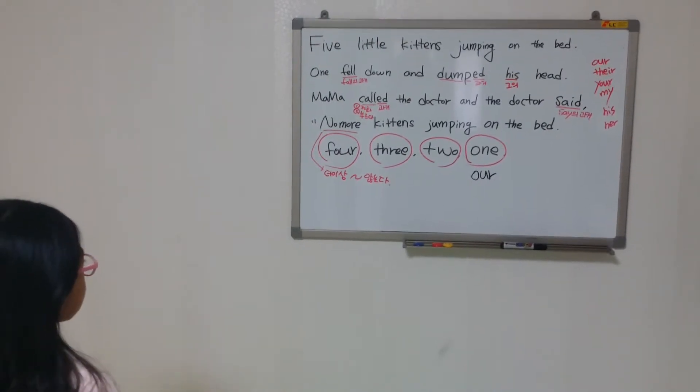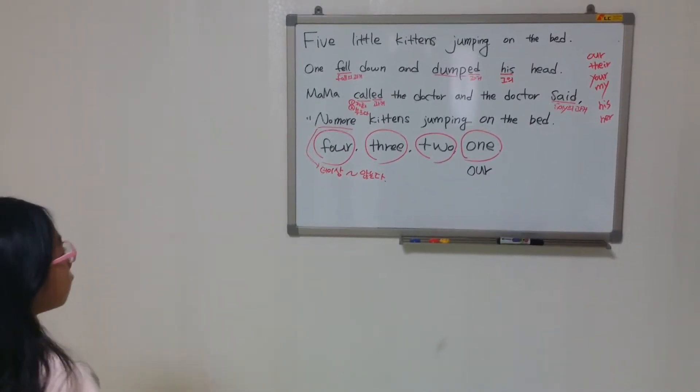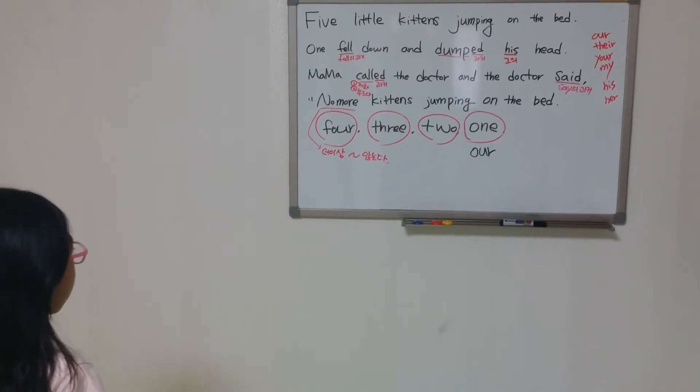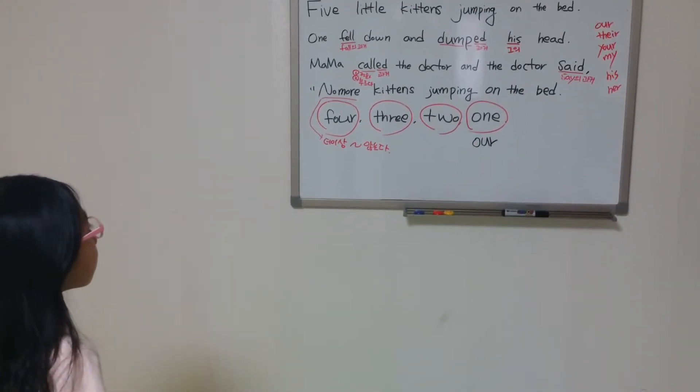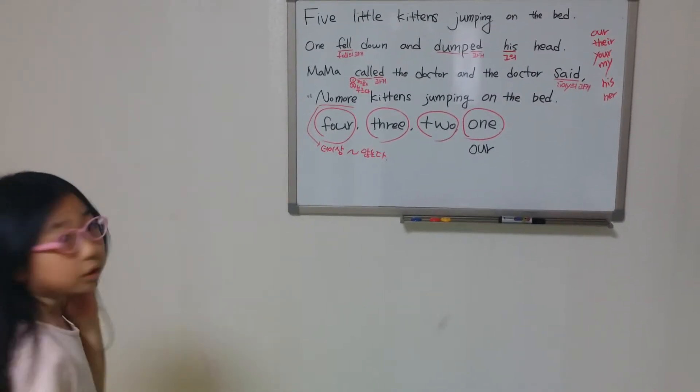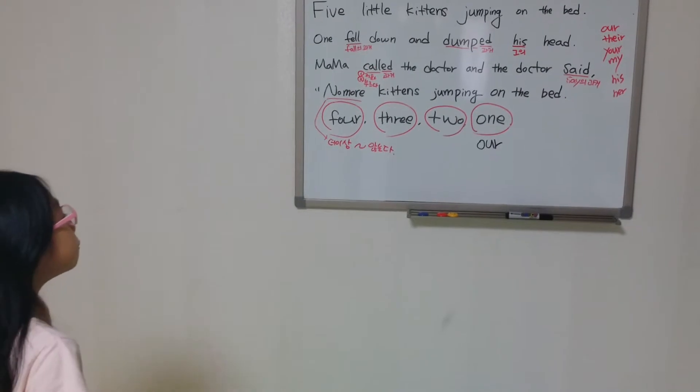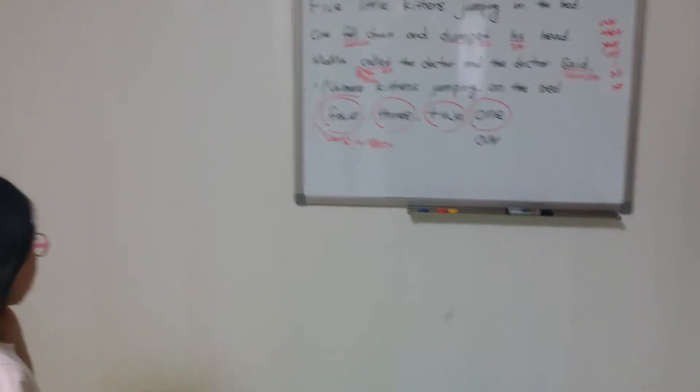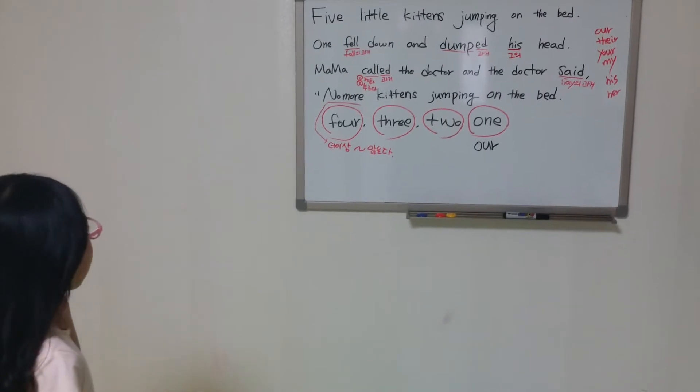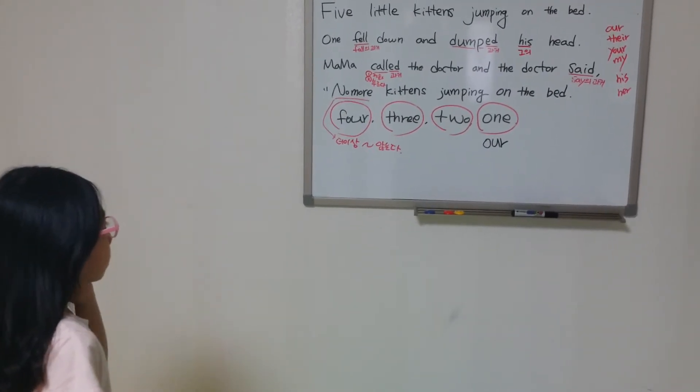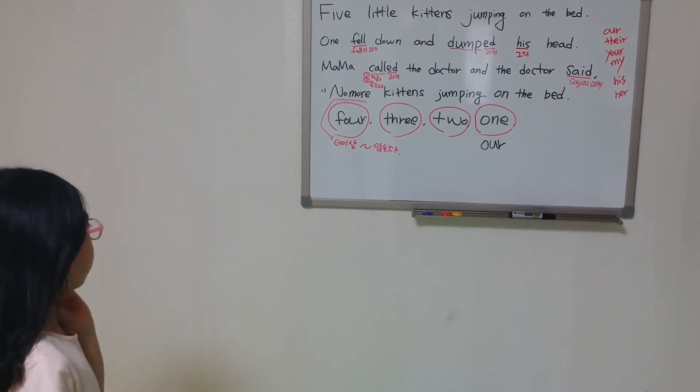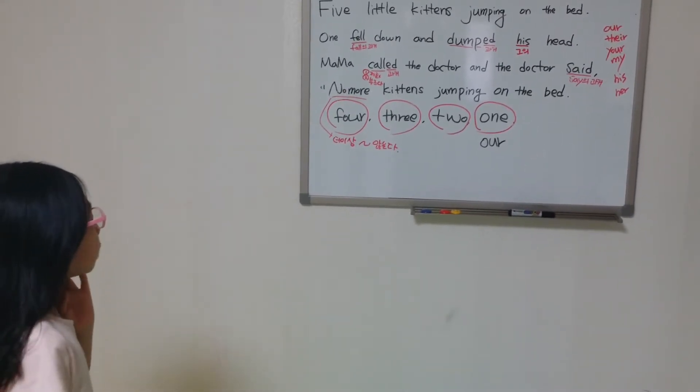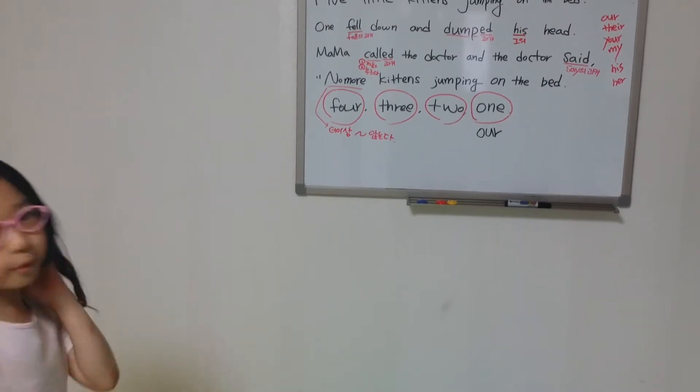다섯 마리의 작은 새끼 고양이들이 침대 위에서 뛰고 있었어요. 한 마리가 떨어졌어요, 그리고 그의 머리를 부딪혔어요. 엄마가 의사 선생님께 전화를 했어요. 의사 선생님이 말하였어요, 더 이상 새끼 고양이들이 침대 위에서 뛰게 하지 말아요. Very good.